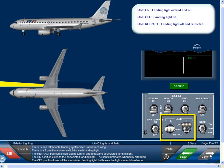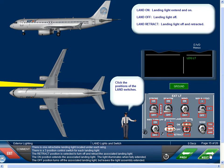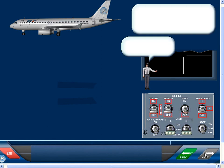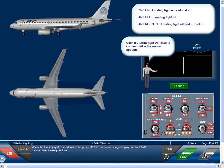The off position turns off the associated landing light but leaves the light assembly extended. When the landing lights are extended, the green landing light memo message displays on the EWD.